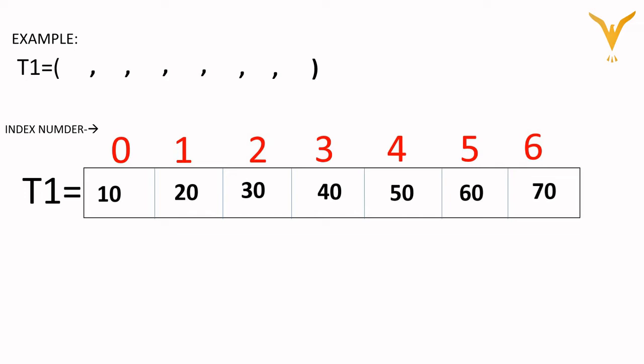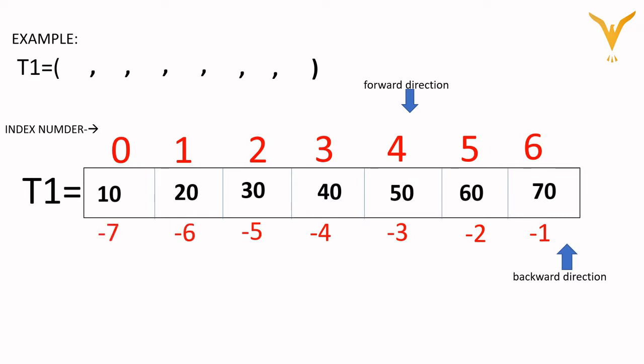For example, if I want to fetch the value 40 from tuple t1, I will write t1 in square bracket 3, and this will give me the output as 40. This is called forward indexing. If I want to fetch values from the backward direction, the index number starts with minus 1, minus 2, minus 3 and so on. For example, to fetch value 70 using backward direction I pass minus 1, and from forward direction I pass 6 — both give the same output.